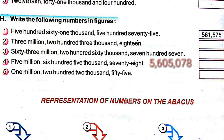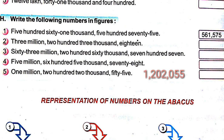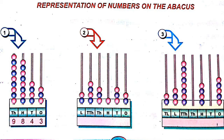The next number 5: 1 million 202 thousand 55. In millions period 1, in thousands period 202, ones period 55. The number is 1,202,055.